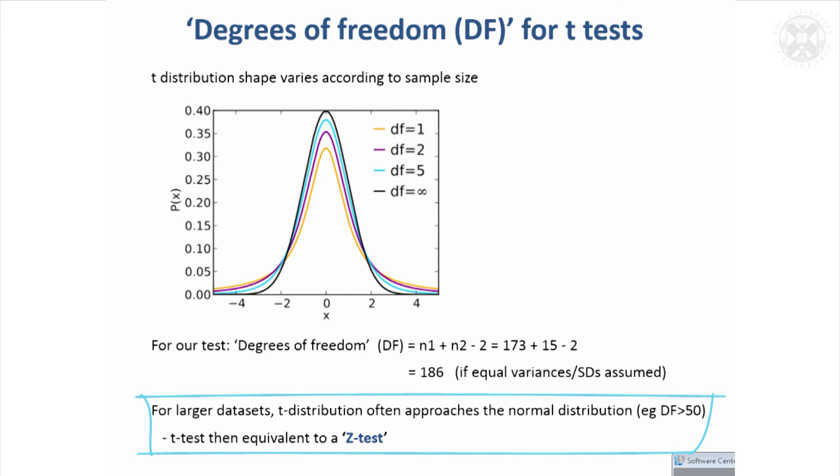If you've got a very large dataset, you'll find your degrees of freedom is approaching this black line where it's infinite, and that's in fact the normal distribution. So the t-distribution is just a slight variation from the normal distribution. If you ever come across things called z-tests in the literature, that's basically a t-test but with infinite degrees of freedom. So very similar to a t-test, the z-test is going to be based on the normal distribution.